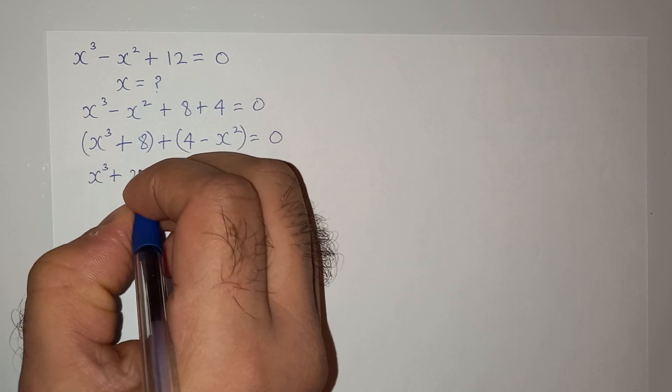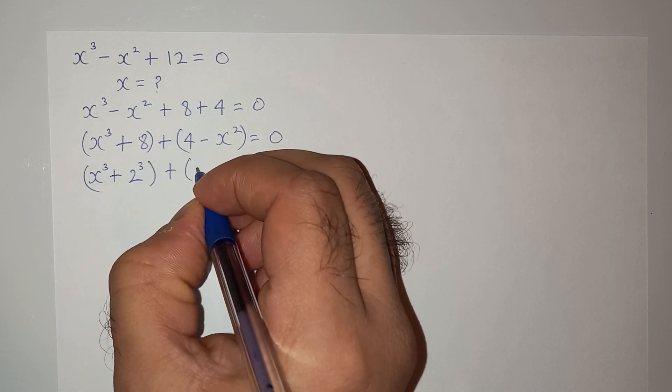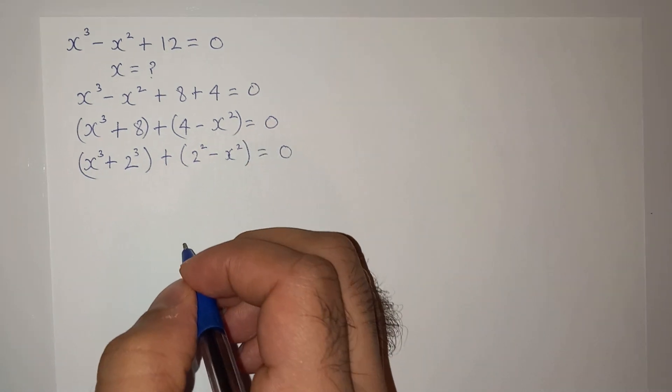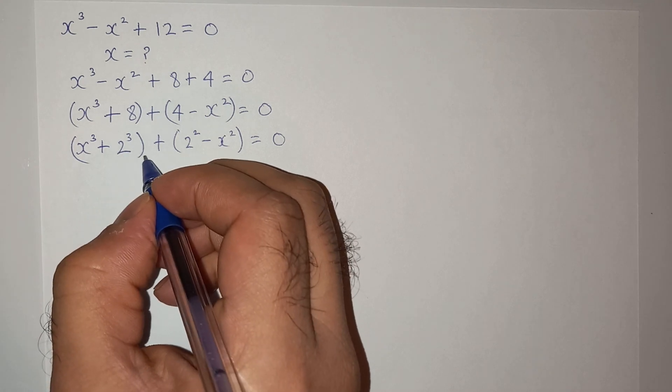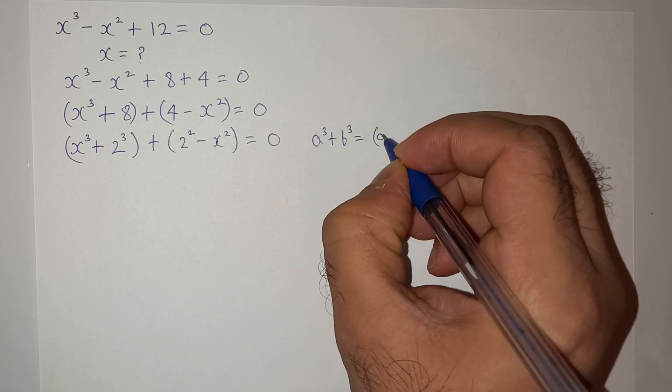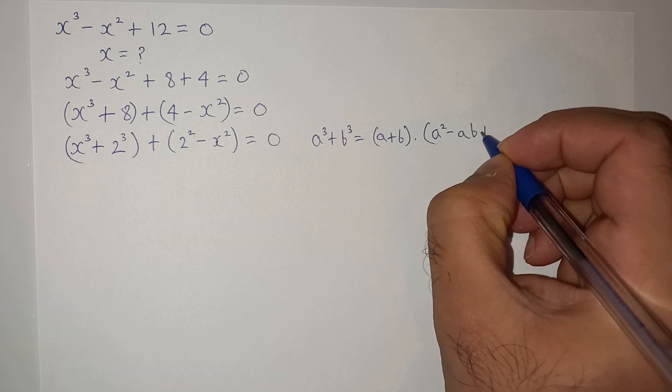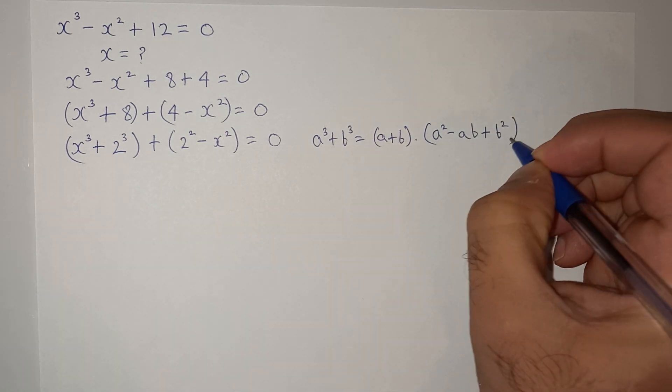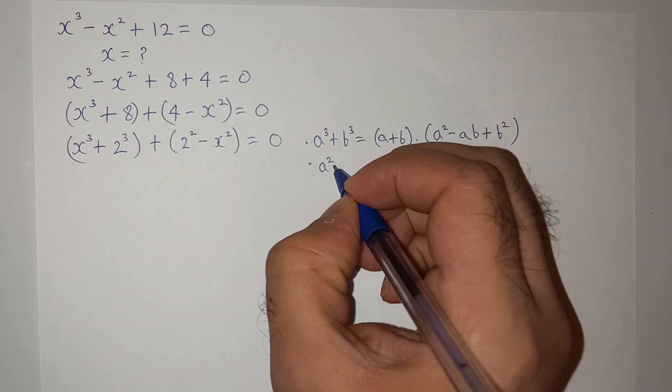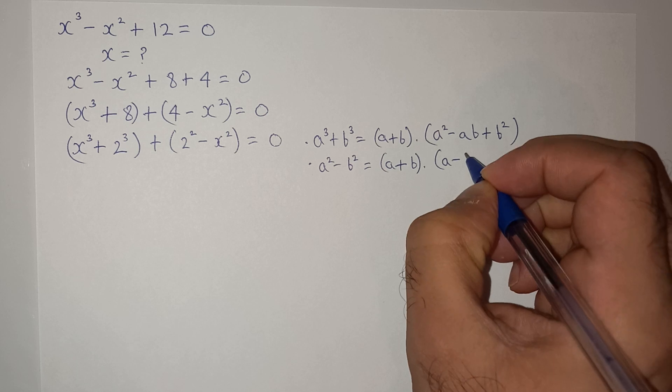So x cubed plus 8 can be written as x cubed plus 2 cubed, and 4 can be written as 2 squared minus x squared equals to 0. Now this is a cube plus b cube formula: a cubed plus b cubed equals to (a plus b) multiplied by (a squared minus ab plus b squared). And this is a square minus b square formula: a squared minus b squared is (a plus b) multiplied by (a minus b).